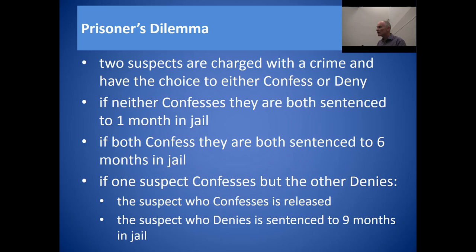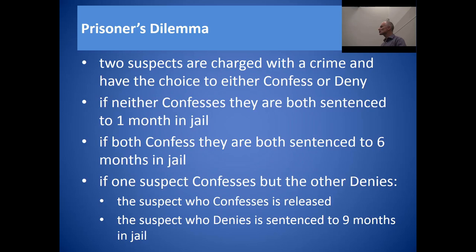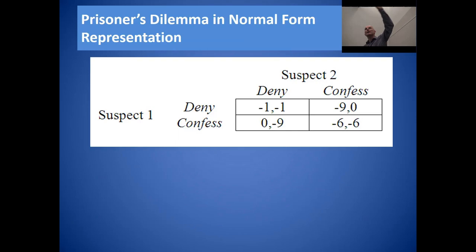So that's the game — the prisoner's dilemma. Rather than writing it in word form, we can represent it in a simple matrix that encapsulates everything we've just described. This matrix is a very specific way that games are represented in game theory, and that matrix formulation is called the normal form representation.